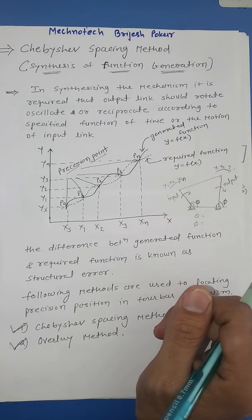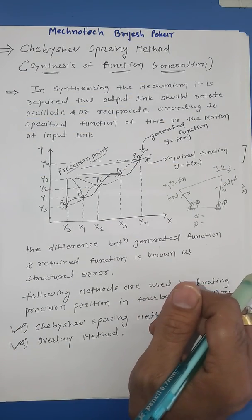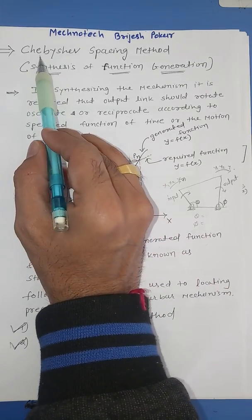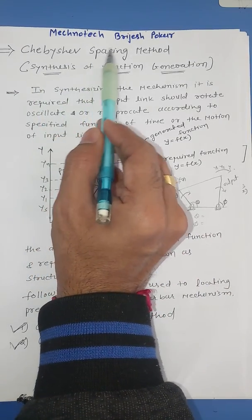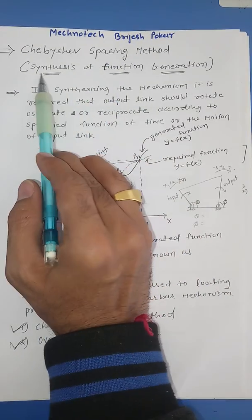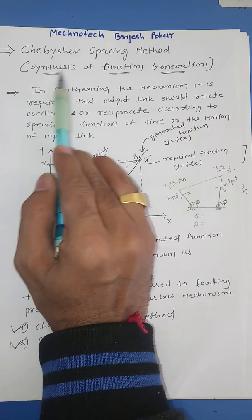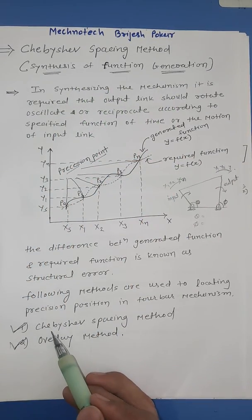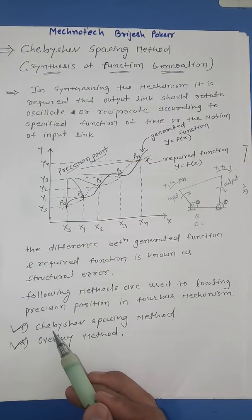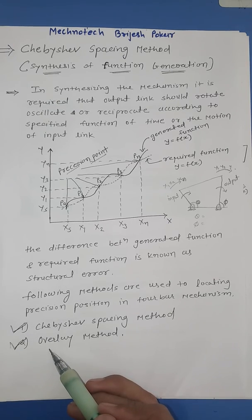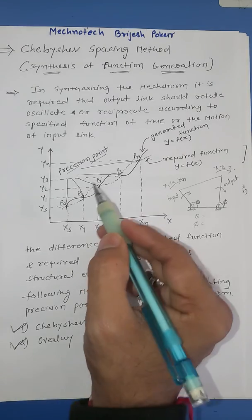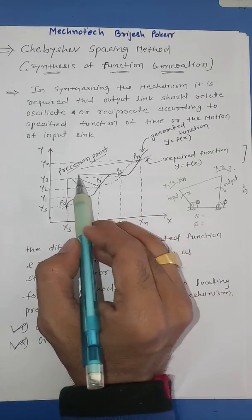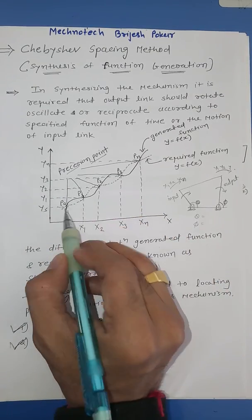Hello friends, welcome to Magnetitech YouTube channel. Today's topic is the Chebyshev spacing method, which is a part of synthesis of function generation. There are two types for this synthesis of function generation: Chebyshev spacing and the overlay method.